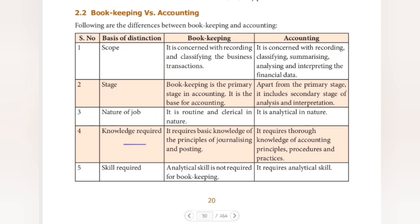The five bases are: scope, stage, nature of job, knowledge required, and skill required. First, on scope — bookkeeping is concerned with recording and classifying business transactions. Bookkeeping records the business transactions and classifies them under the appropriate heads.